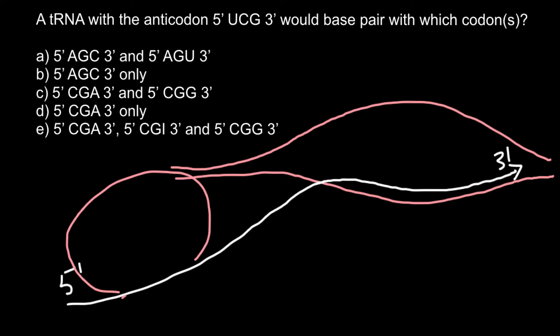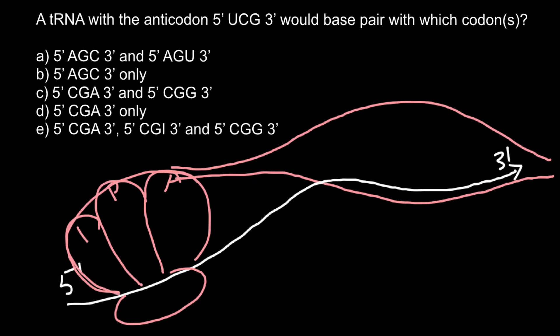This is the large subunit and this is the small subunit. The large subunit has three sites: one is the A site, another one is the P site, and the last one is the E site. Now imagine that here in the A site we have a tRNA.